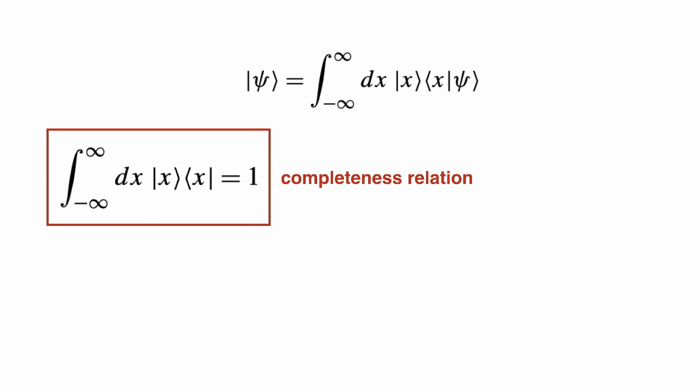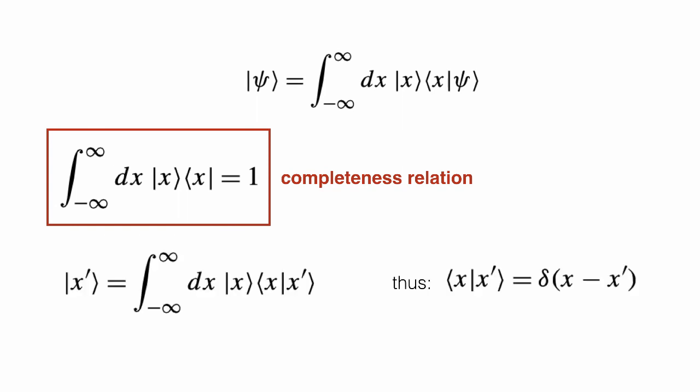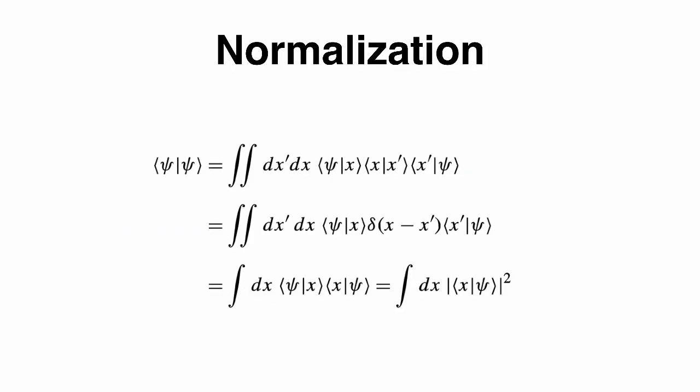We can write a completeness relation. The identity operator on the right-hand side is actually an operator. If we apply the identity operator to one of the eigenstates of x̂, we need the bracket ⟨x|x′⟩ to equal the Dirac delta, δ(x − x′). The difference is that instead of a Kronecker delta, now we work with a Dirac delta, and instead of a sum we use an integral.